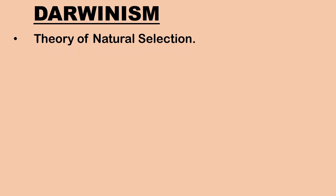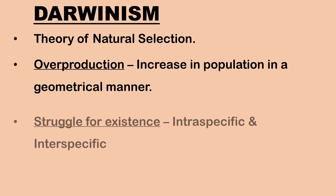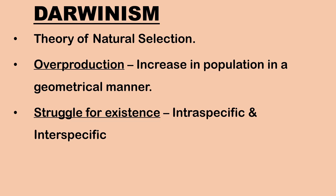Next is Darwin's theory of natural selection, also known as Darwinism. Charles Darwin postulated the theory of origin of species by natural selection based on various facts and observations. Darwin's theory of organic evolution is based on the following principles. First, overproduction: every species has a great potential for reproduction and tends to increase in population in a geometrical manner. Second, struggle for existence: since the number of individuals formed are far more than what the environment can sustain, there is intraspecific or interspecific struggle for existence.